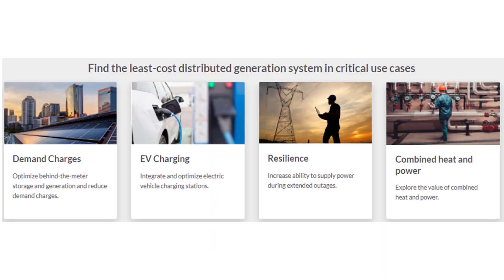Homer Grid's main value proposition is reducing utility charges by using solar and storage to shift and smooth peak utility usage to times when rates are lower. Demand charges are based on the maximum load, typically for just 15 minutes. Time-of-use rates provide less expensive electricity at certain times. Solar and storage together can reduce both these rates.